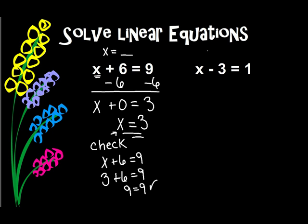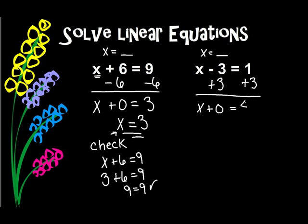So let's go to the next one. Once again, I want x equal to something. Now I have x minus 3. The opposite of subtracting 3, or minus 3, is adding 3. But remember, I have to do it to both sides of the equal sign, because I need to keep my equation balanced. When I add down, I get x plus 0 equals 4.